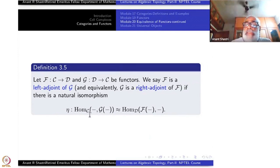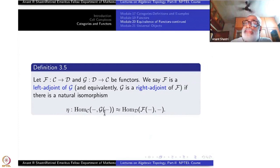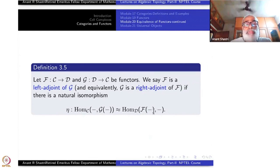Specifically, Hom_C(C, GD): here GD is inside C so both slots are inside C, making Hom_C sensible. Similarly, Hom_D(FC, D): here FC is an object in D and D is also in D, so Hom_D makes sense. Both of these are sets, so this must be a bijection from one set to another set — it must be a bijection.